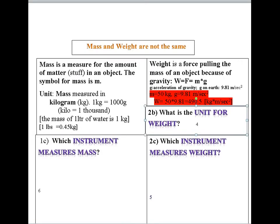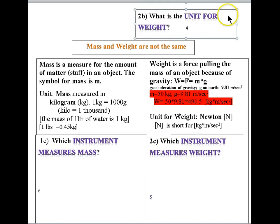You can imagine that it is always very inconvenient to say the weight of an object is 490.5 kilogram meter per second squared. To make it shorter there is a unit for weight called the Newton, abbreviated with an N. But please always remember that a Newton with an N is short for kilogram meter per second squared.